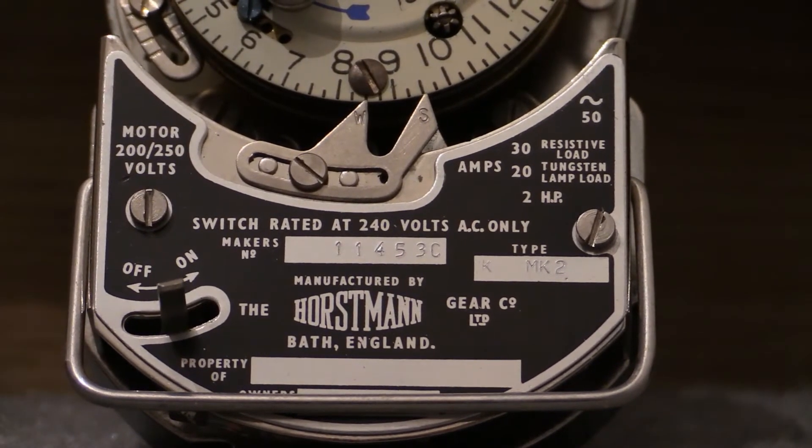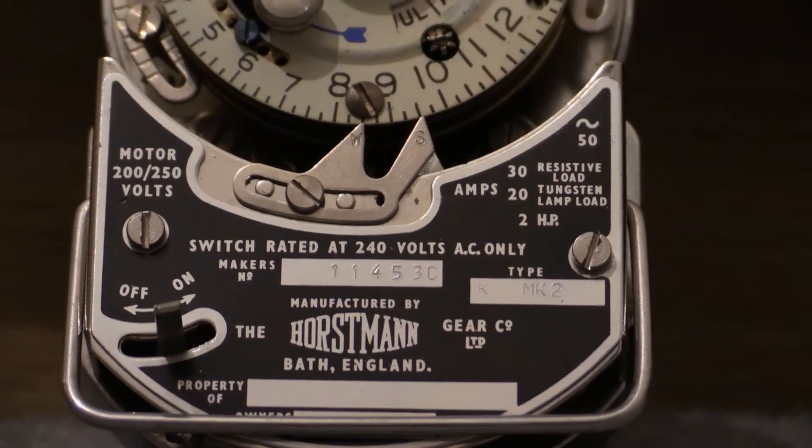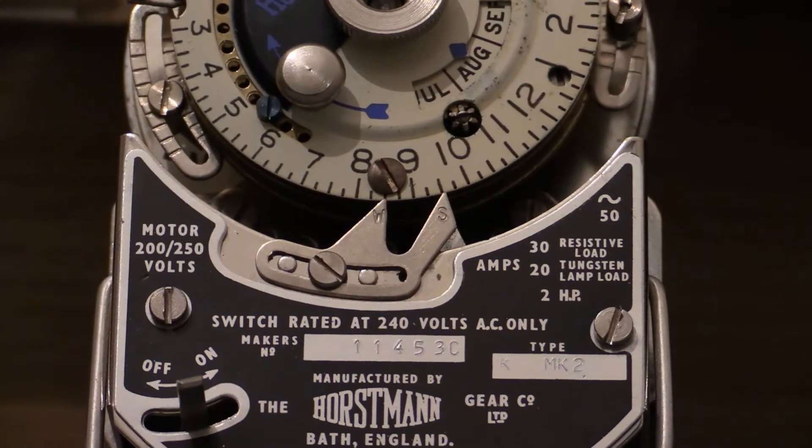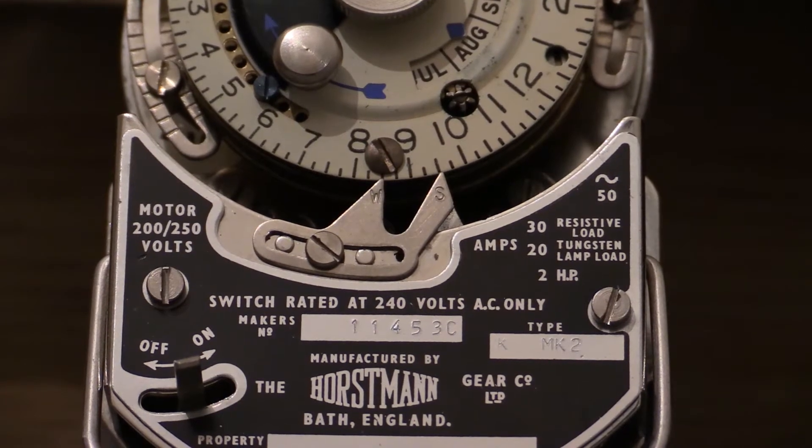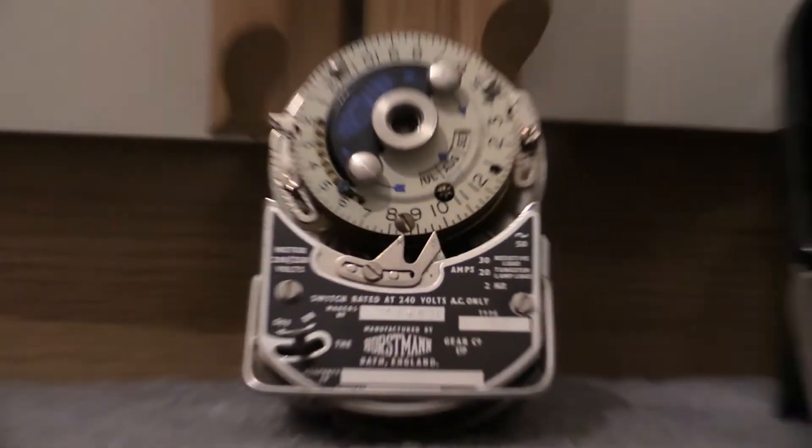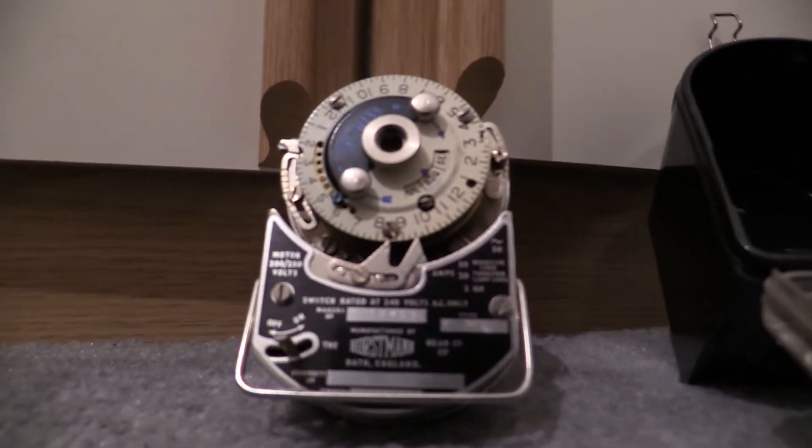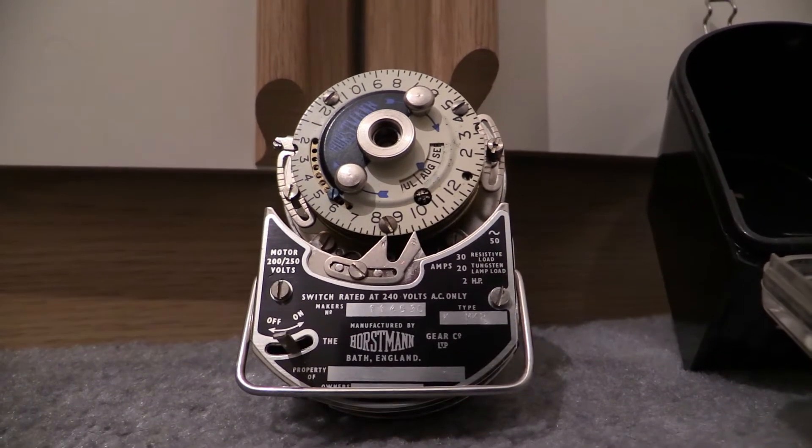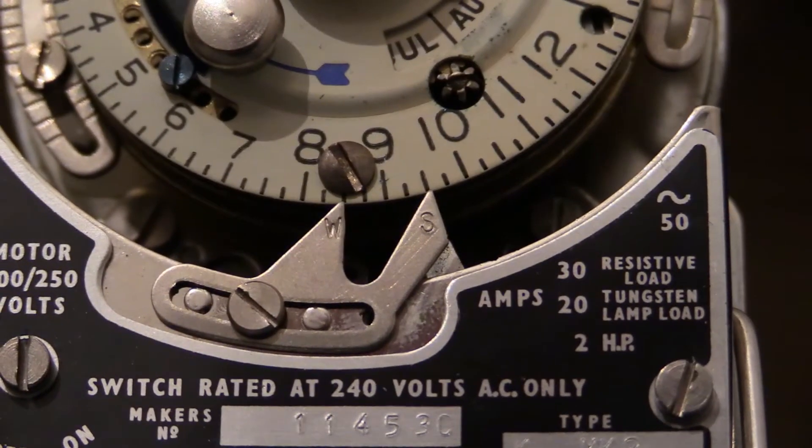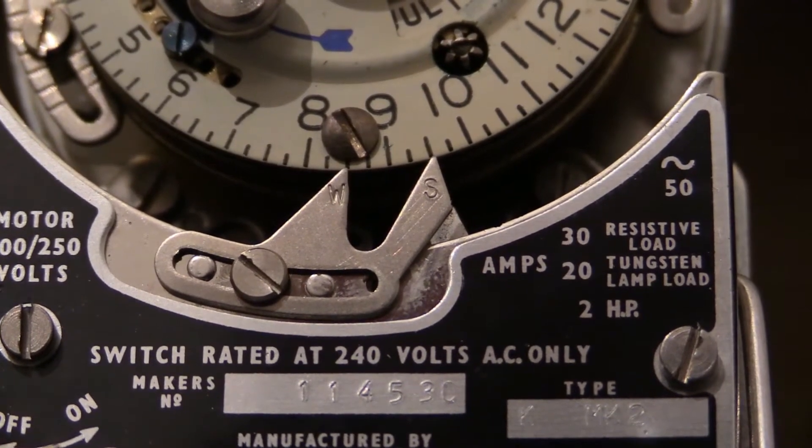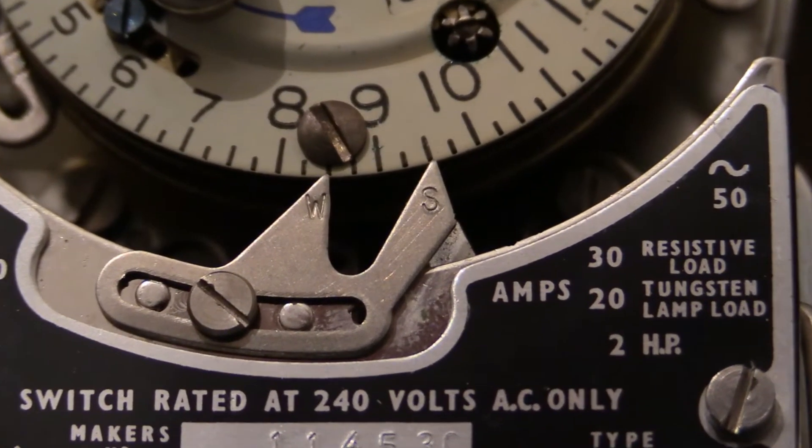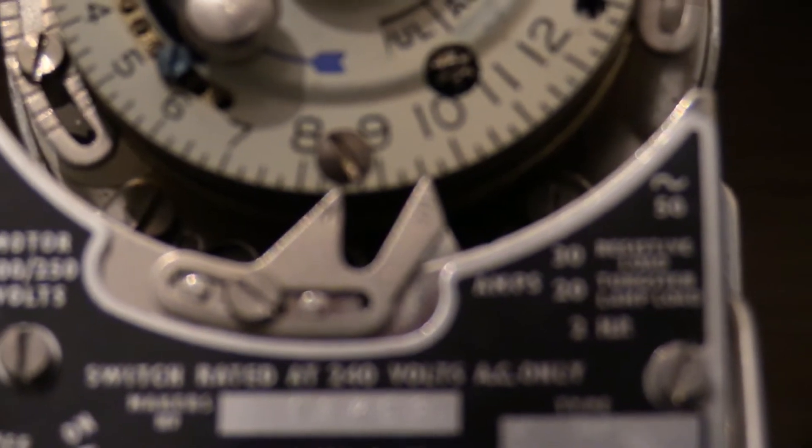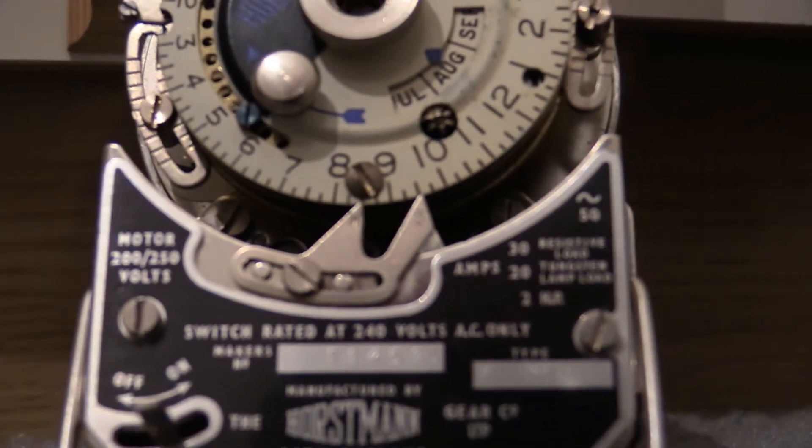Now the time indicator on this is a bit of an interesting one because you have on that two pointers: one's got W on it and the other one's got S. Let me get that camera a bit closer. Now let's see if I can zoom in on that and get a nice little focus going. Oh yes, I can look at that, it's nice and sharp then. So we've got W on that and S. W is for winter and S is for summer, so you don't need to wind this on or back according to GMT or BST. GMT is obviously Greenwich Mean Time.